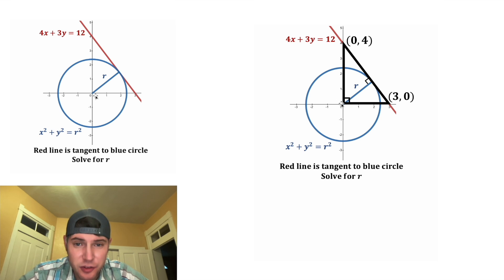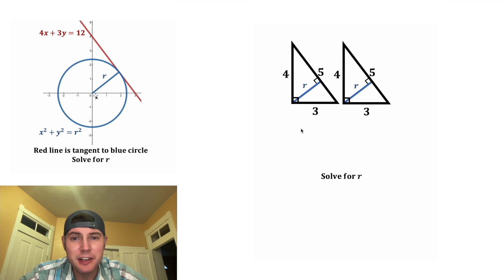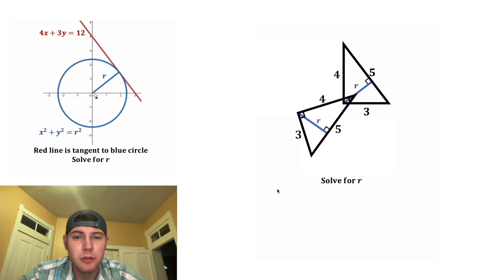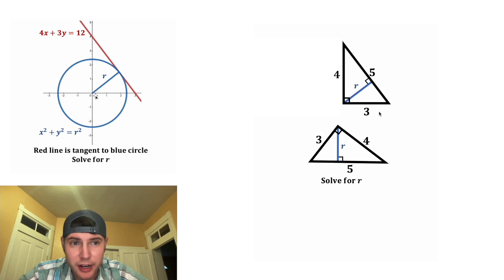This side is going to be the distance from 0, 0 to 0, 4, which is 4, and this side will be the distance of 3. And since it's a right triangle, it's a Pythagorean triple. It's going to be a 3, 4, 5 right triangle. So now let's focus on this triangle and make a duplicate, and then rotate it and move it down here. So these two triangles are the exact same triangle. One is just rotated.